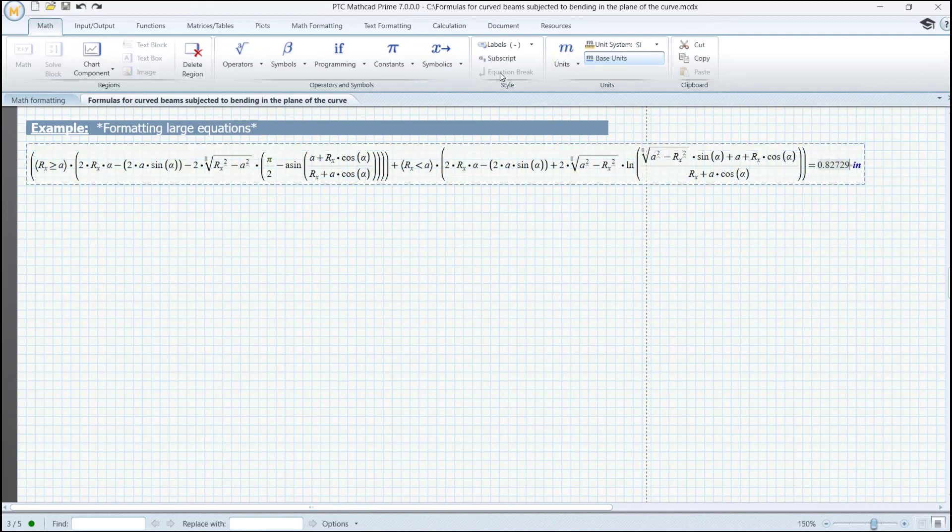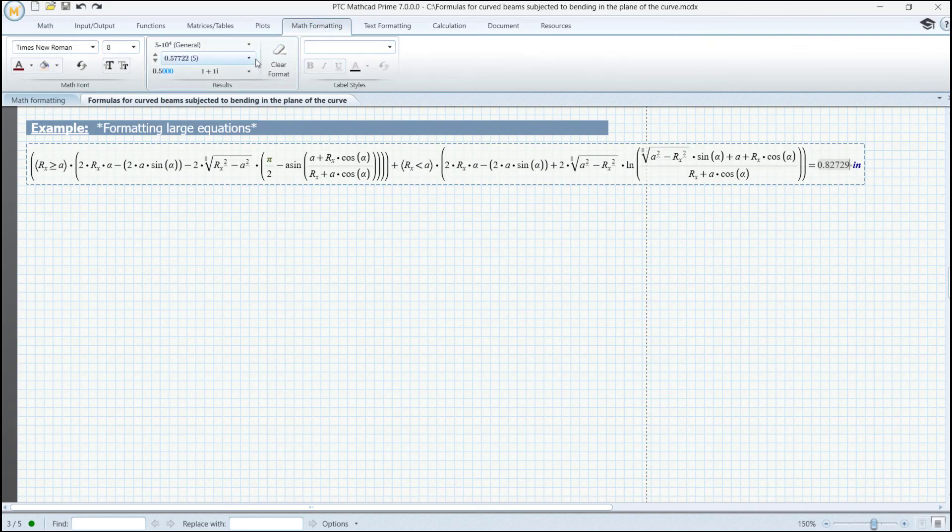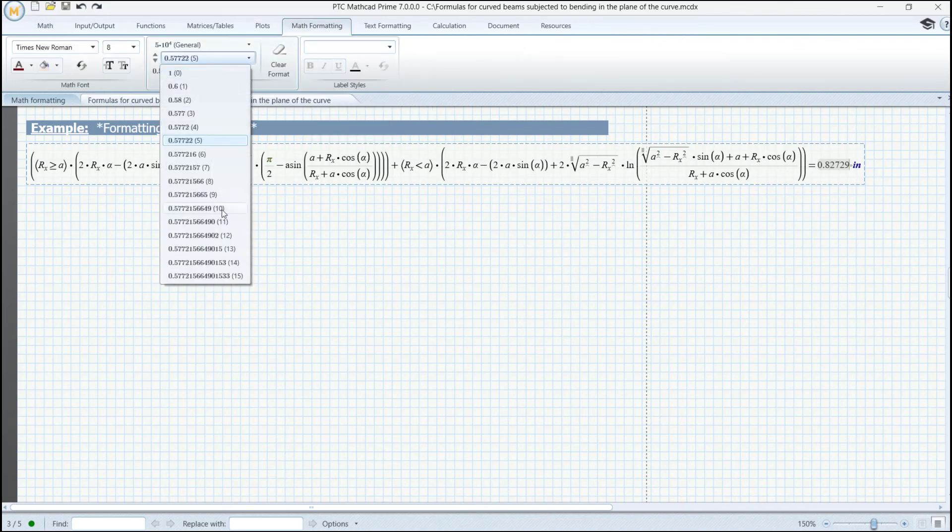Lastly, to show once again how the display precision behaves, let's increase the number of decimals in this result. We go again to the Math Formatting tab and change it from here, since we can set it up to 15 decimal points.